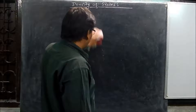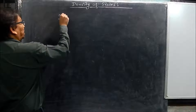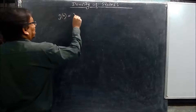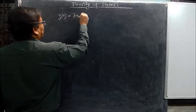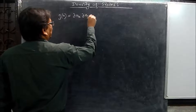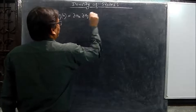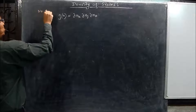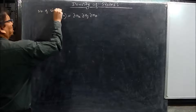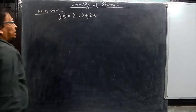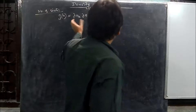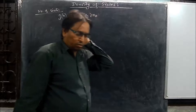The number of states is defined as g(n), which equals δnx · δny · δnz. This is called the number of states — the number of configurations in which the particle can be found.